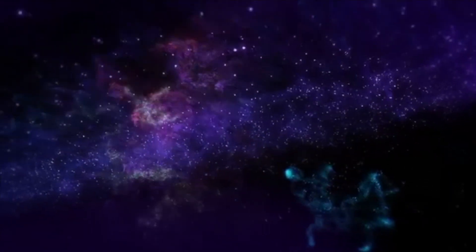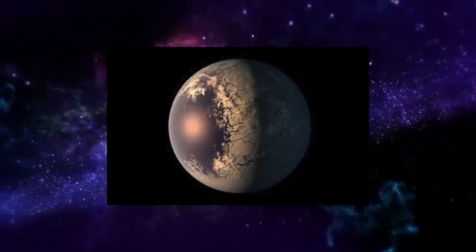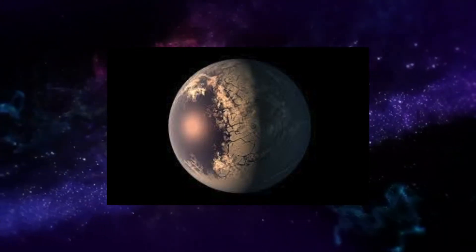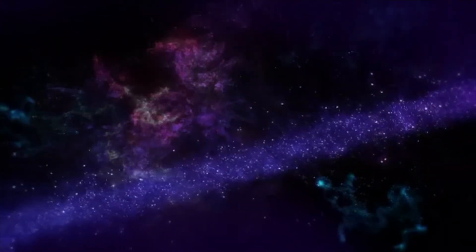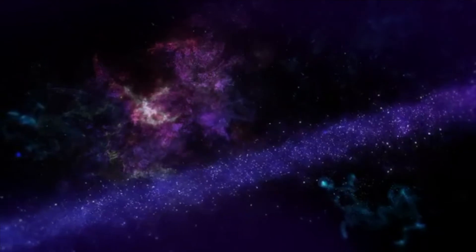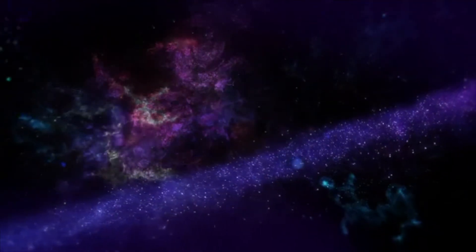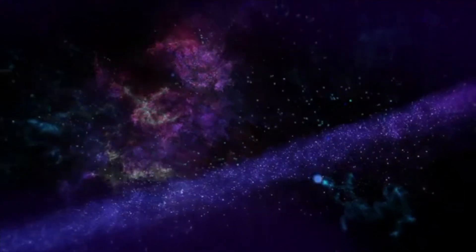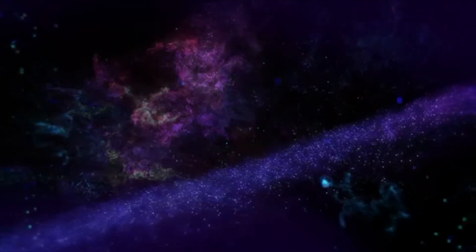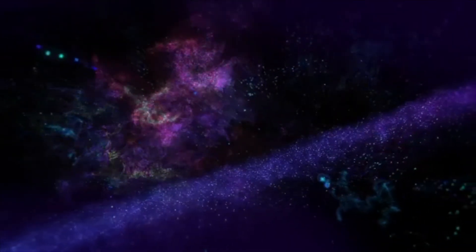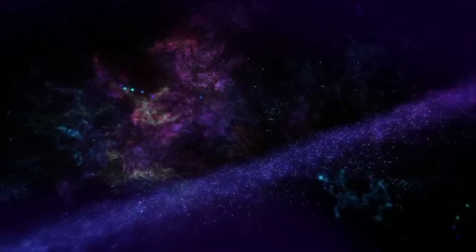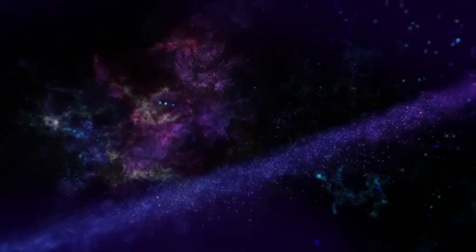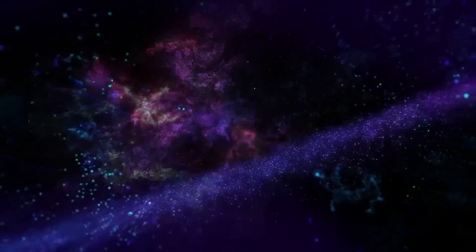From what researchers can tell, KOI 456.04 looks to be less than twice the size of Earth and is orbiting Kepler-160 at about the same distance from Earth to the sun. Its one complete orbit is 378 days. And the most important: it receives about 93% as much light as Earth gets from the sun.